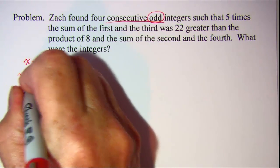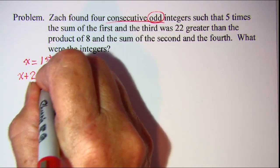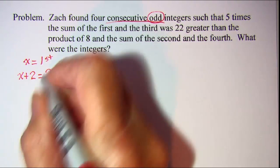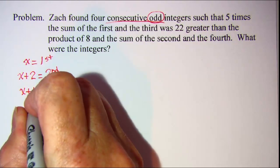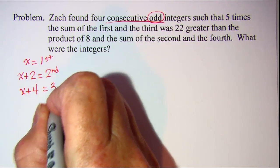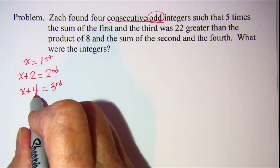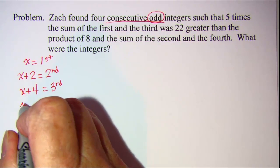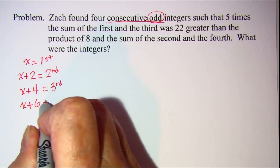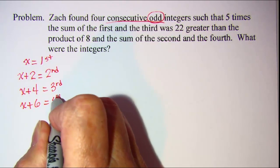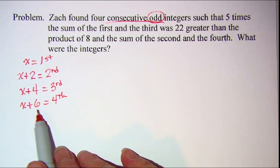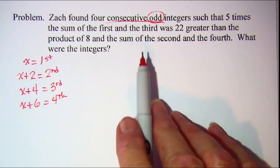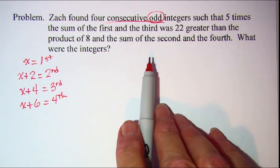So x plus 2 is going to be my second. Add 2 more onto this. X plus 4 will be my third and add 2 more onto this. X plus 6 will be my fourth. So these are the expressions that I'm going to use when I translate this word problem into algebra.